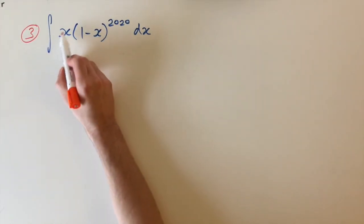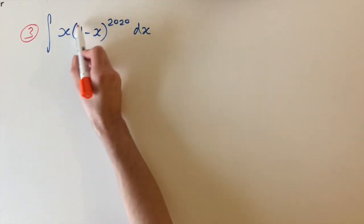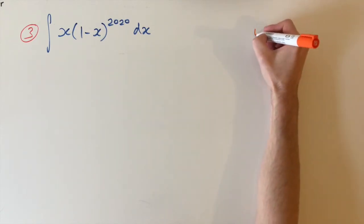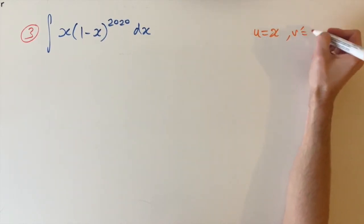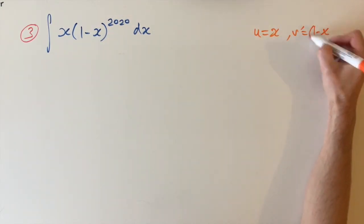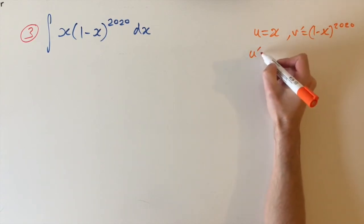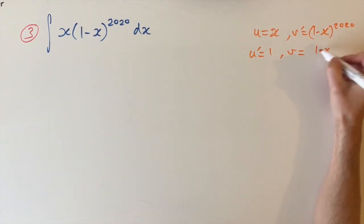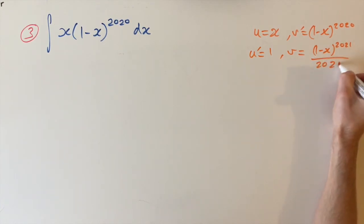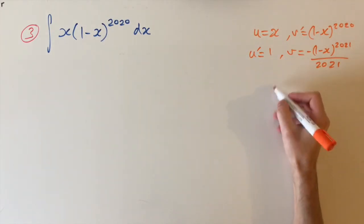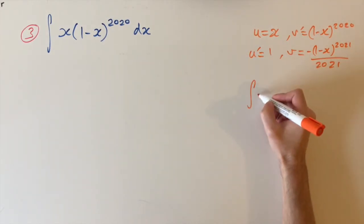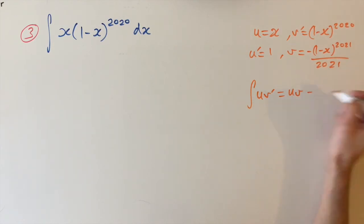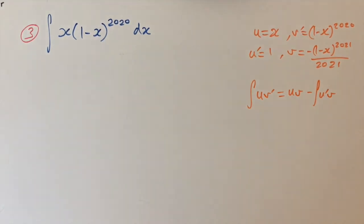We have the x term, which is something we can differentiate, multiplying a term we can integrate. The x will differentiate down to 1, allowing us to evaluate. So we let u equal x, and let v' equal (1 minus x) to the power of 20. Then u' equals 1, and integrating v' we get v equal to minus (1 minus x) to the power of 21 divided by 21. Recalling the by-parts formula: the integral of u times v' equals u times v minus the integral of u' times v.